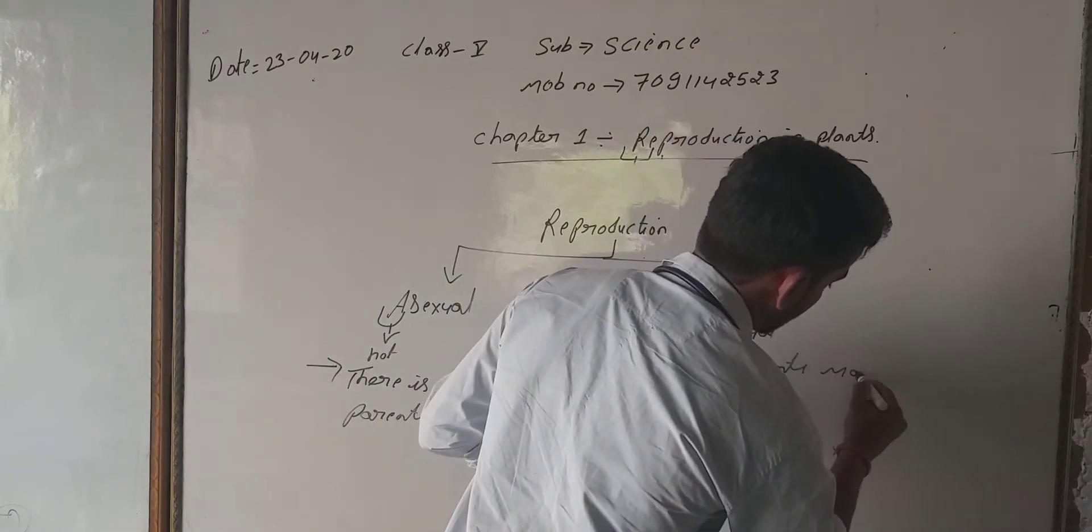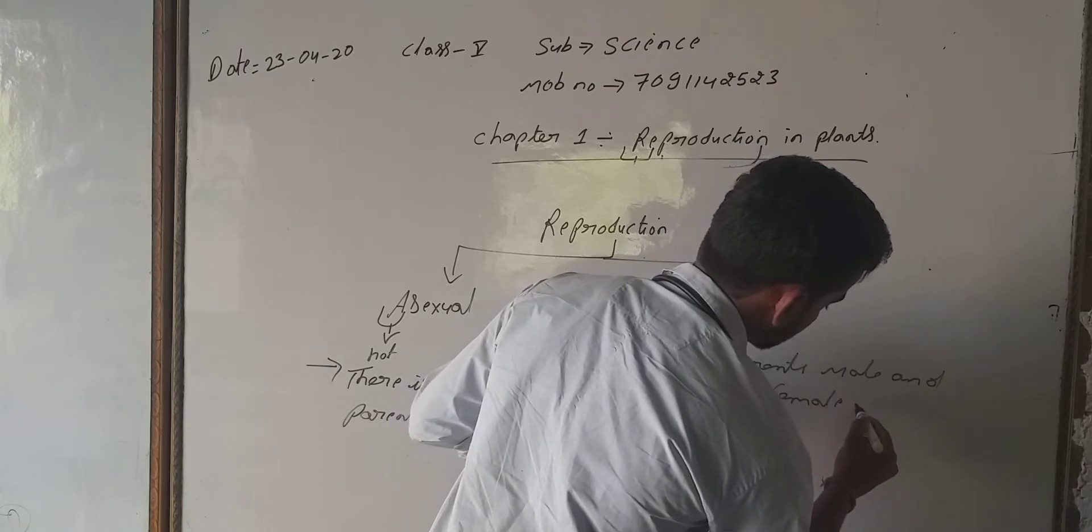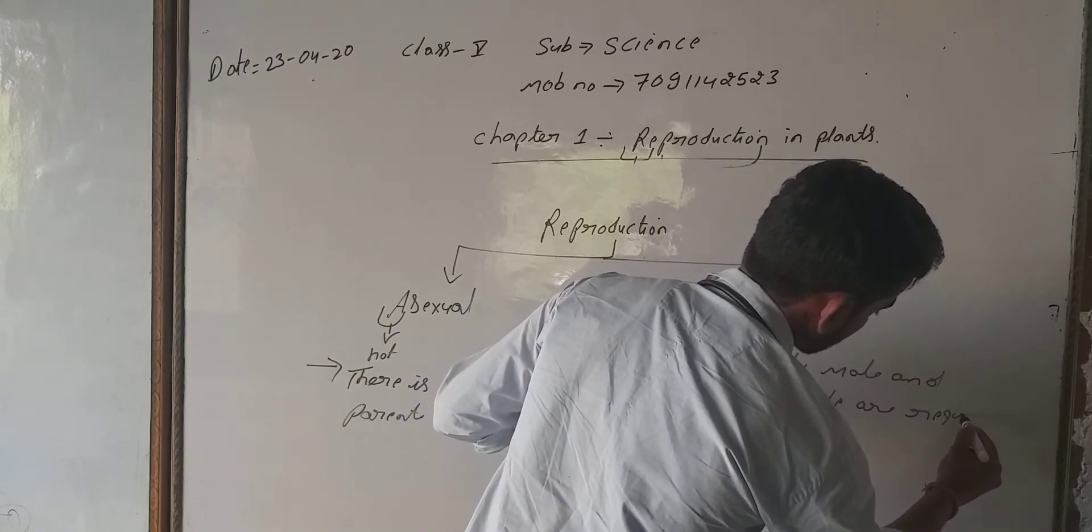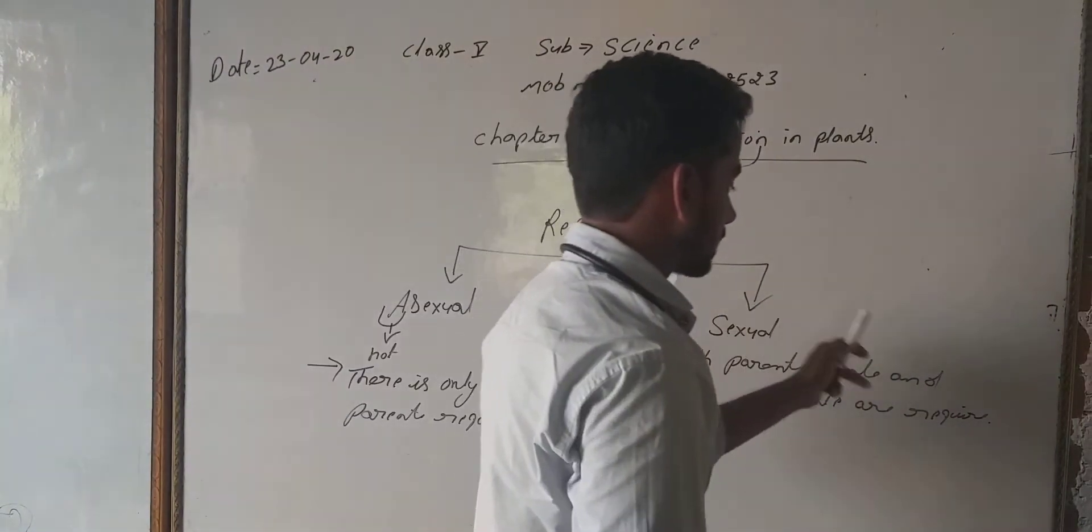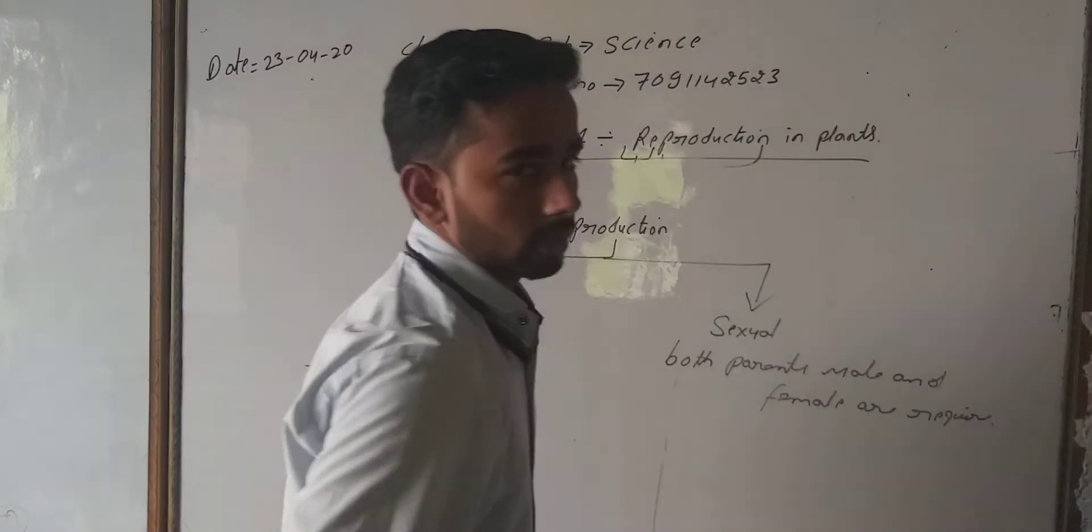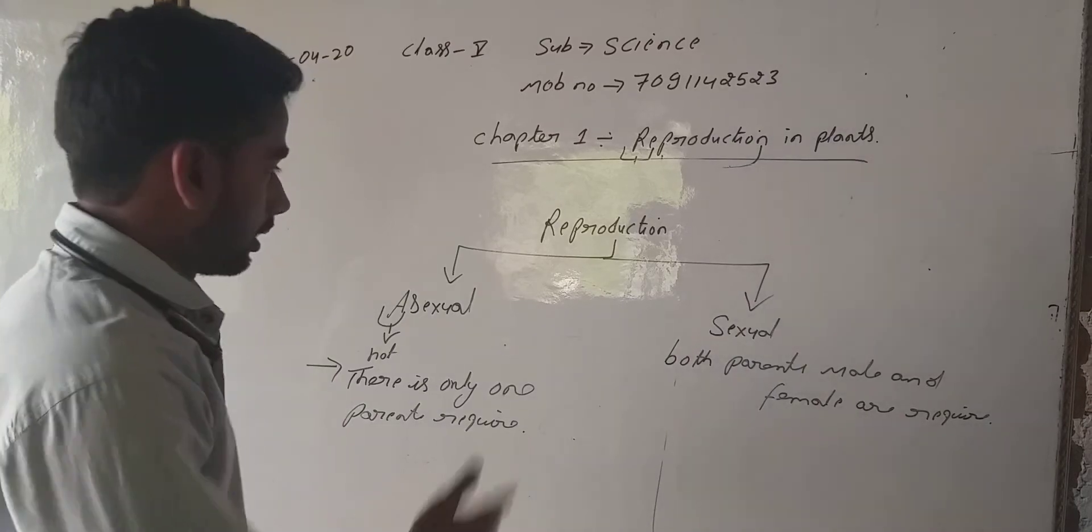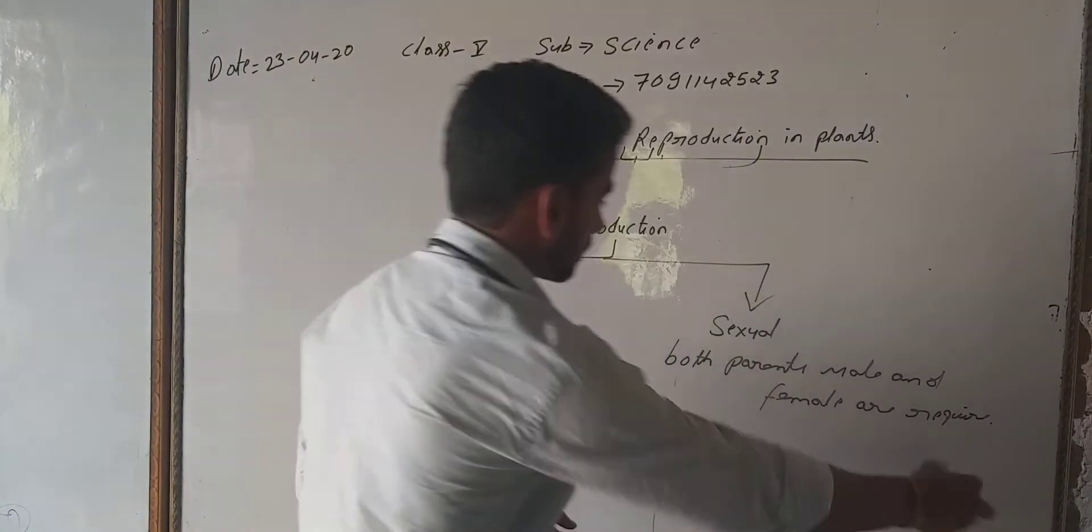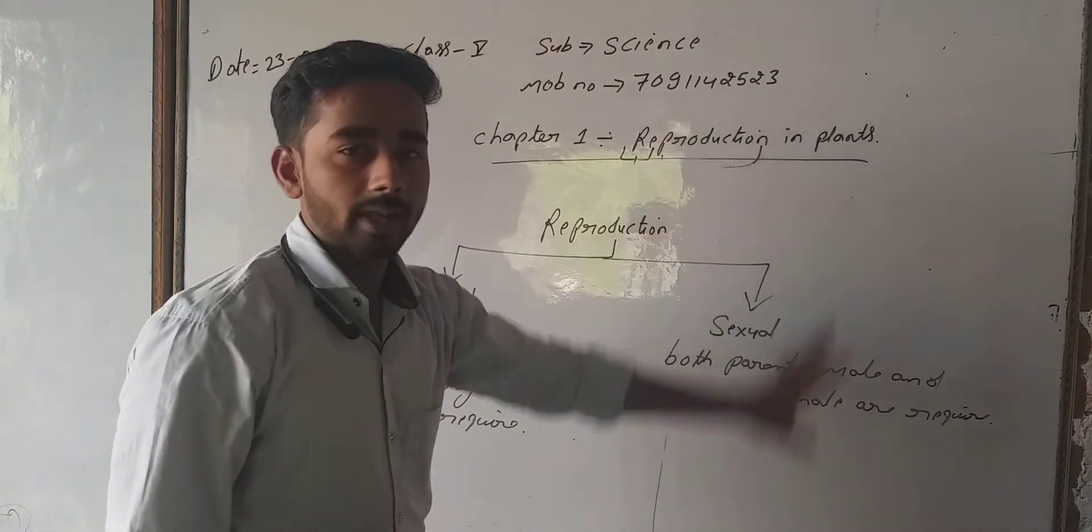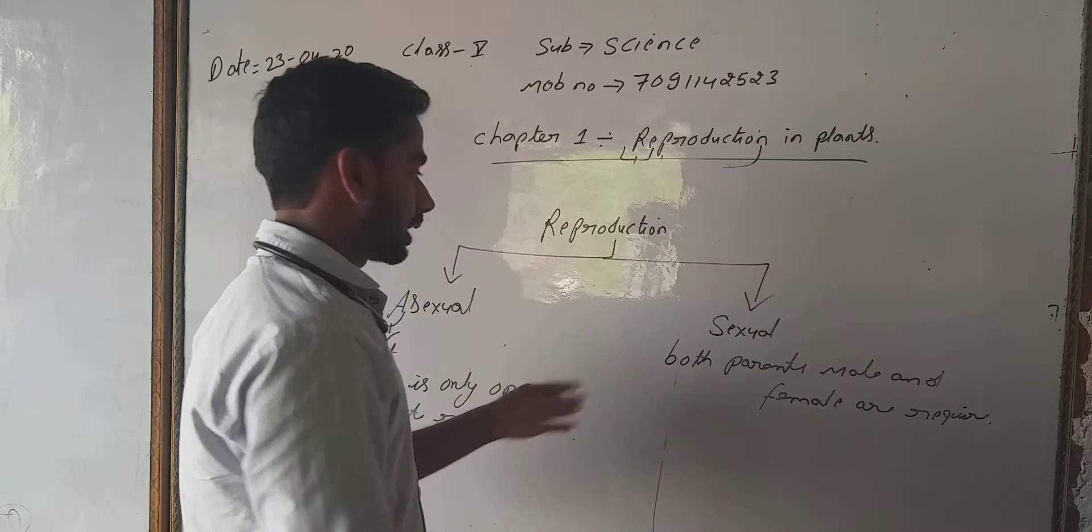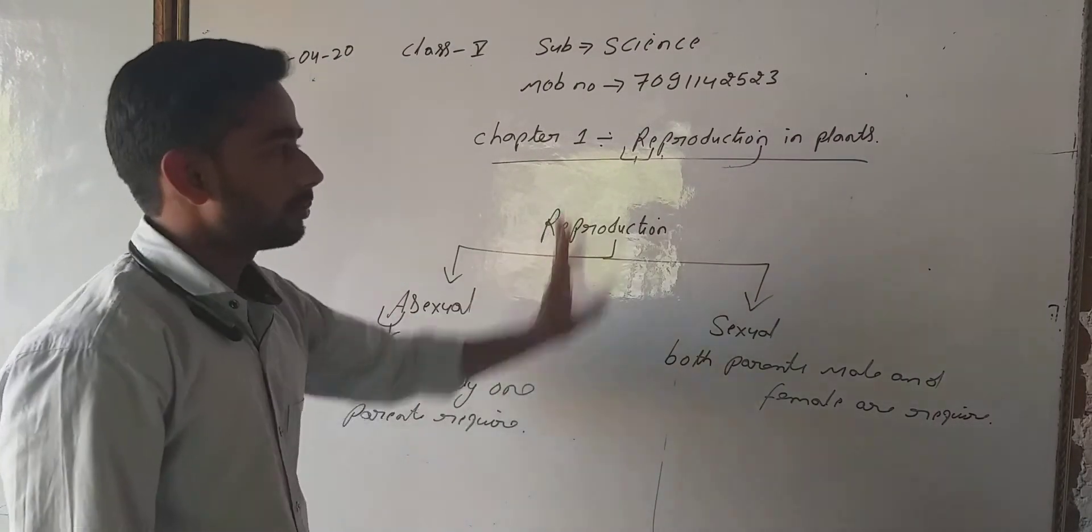These are the two types of reproduction. In Chapter 1, we have to study only about reproduction in plants, so we shall not discuss sexual reproduction. We shall only discuss asexual reproduction in plants.